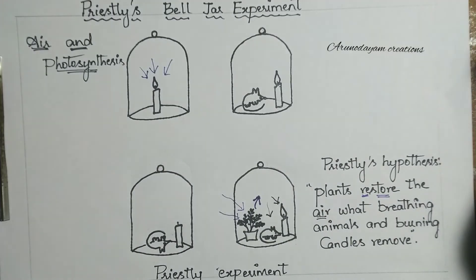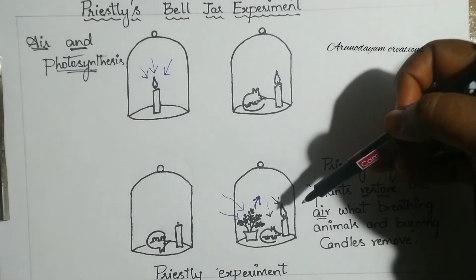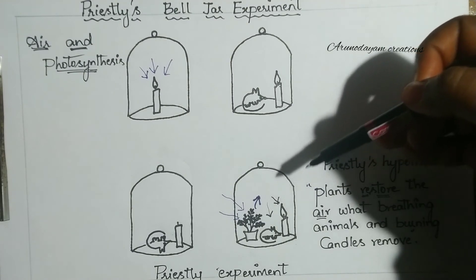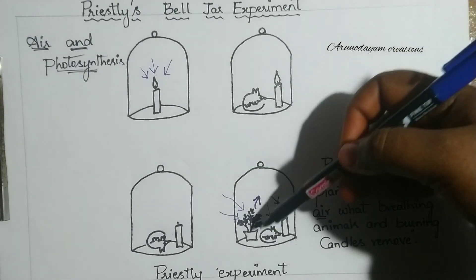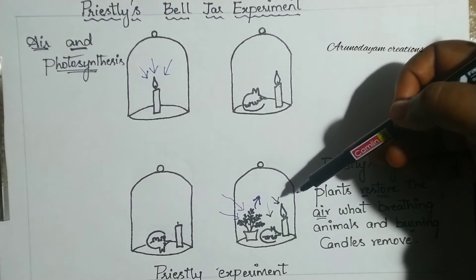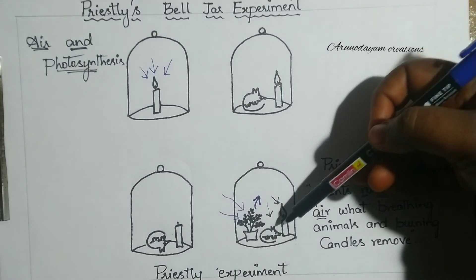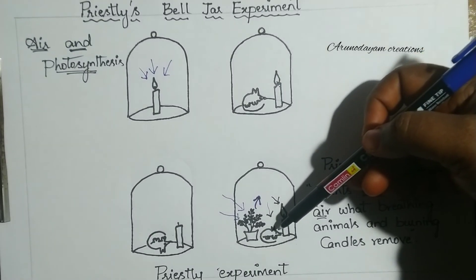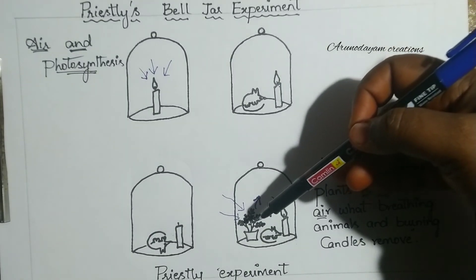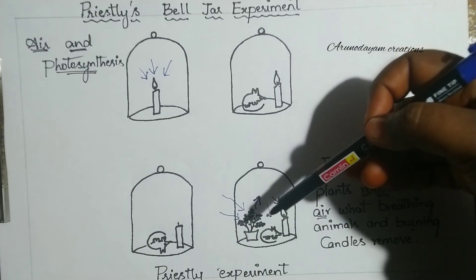A logical question: what would happen if Priestley did not introduce a mint plant in the third series of his experiment? The third series had a burning candle and a mouse. If the mint plant is not added, what would happen? Please try to answer in the comments section.